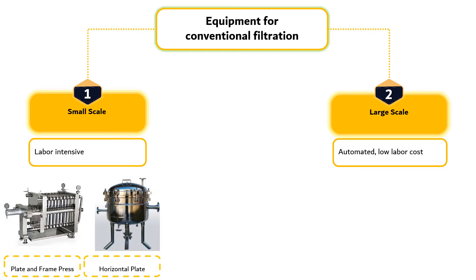Vertical leaf requires only a small floor area but must have sufficient headroom for removal of the leaves and the cake. It has a relatively high filtration area per volume.